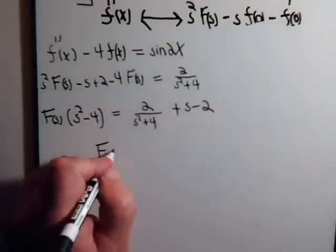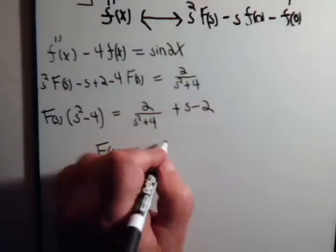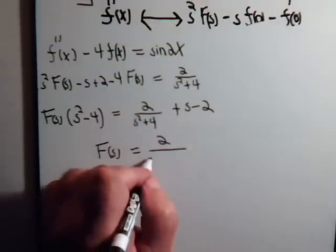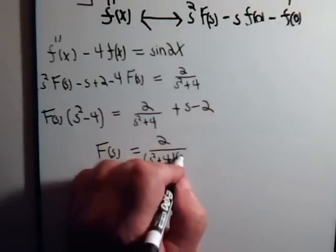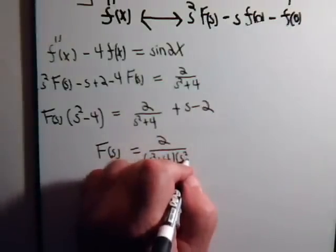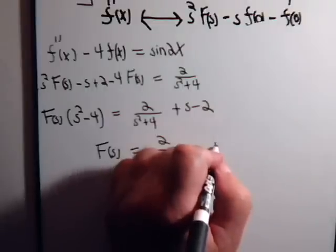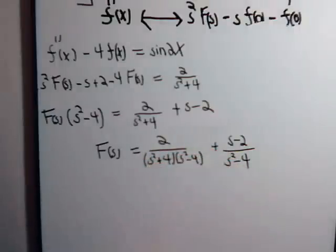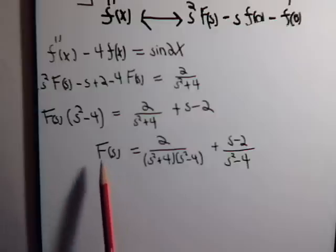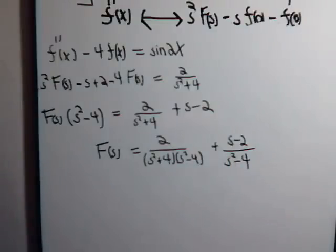And we determine what f of s is. That's equal to 2 divided by s squared plus 4 times s squared minus 4, plus 1 over s minus 2. So right now we have not yet determined f of x, obviously. We haven't solved for this. But we do know what the Laplace transform is. It's that expression there. And let's see if we can simplify this now so we can take the inverse of the Laplace transform.